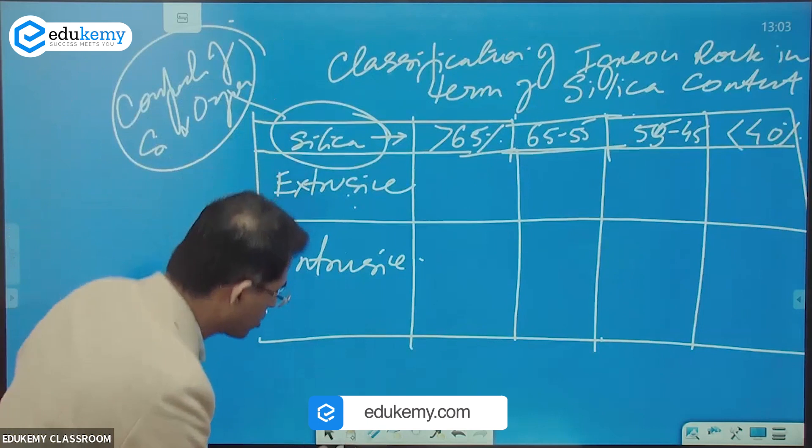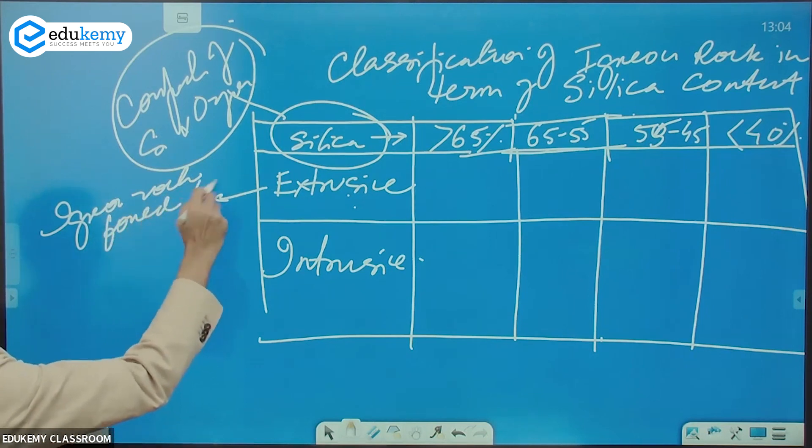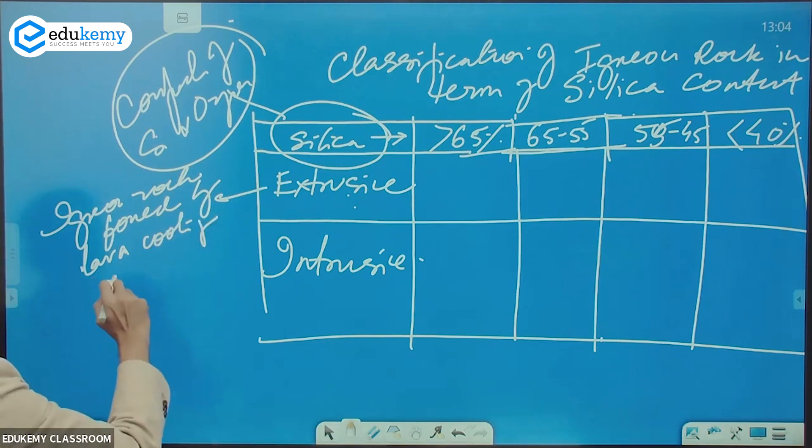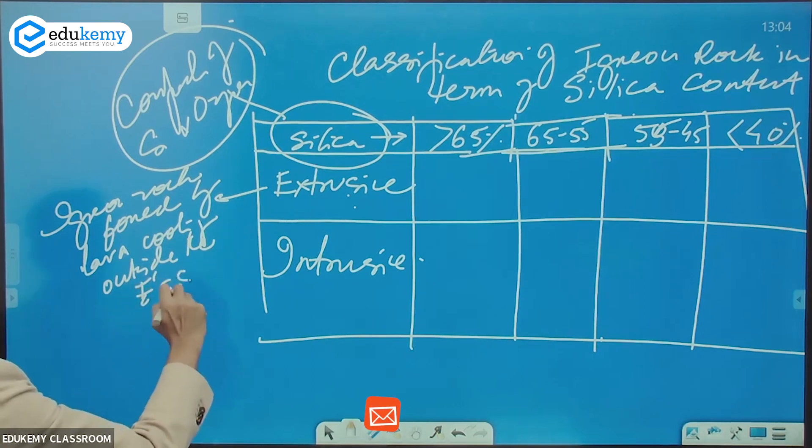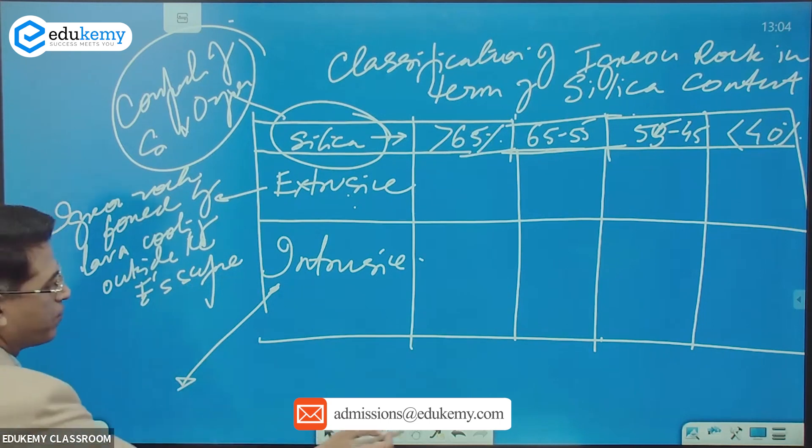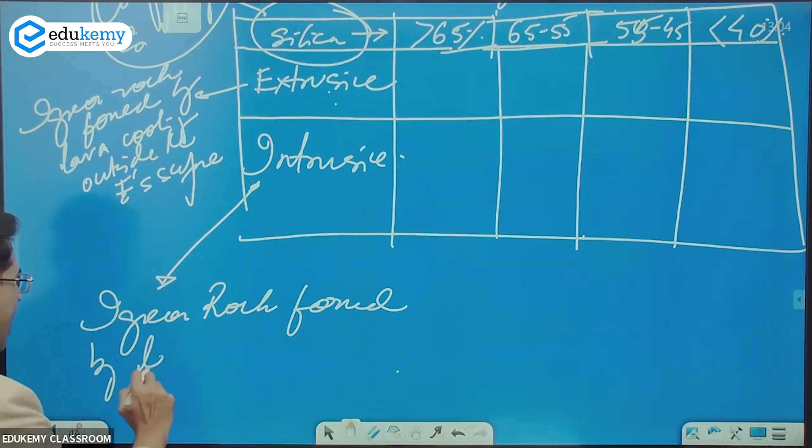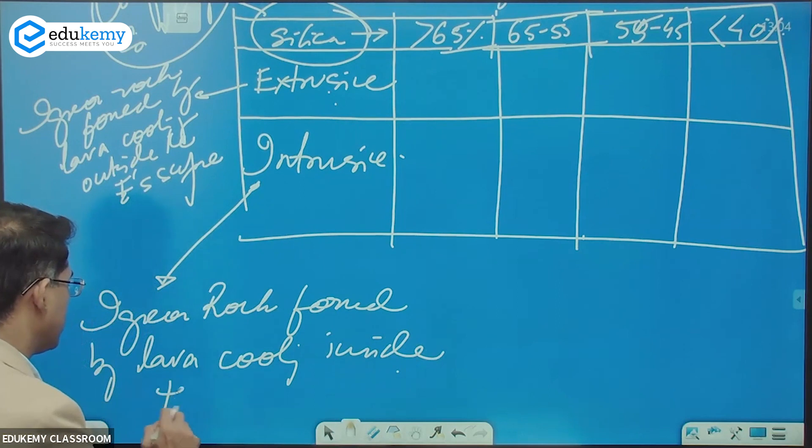These are igneous rocks formed by lava cooling outside the earth's surface. And what is intrusive? These are igneous rocks formed by lava cooling inside the earth's surface.